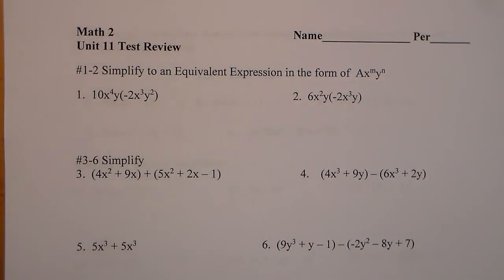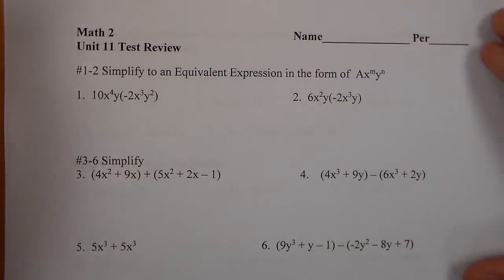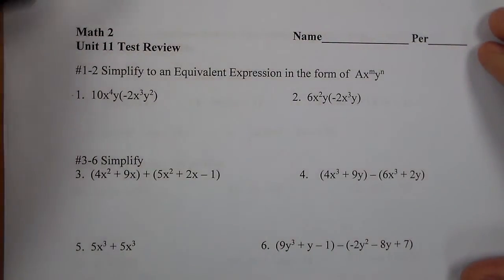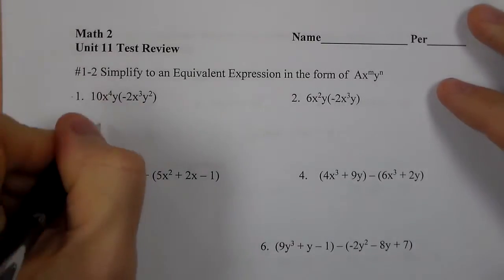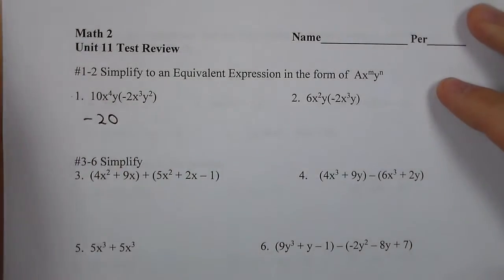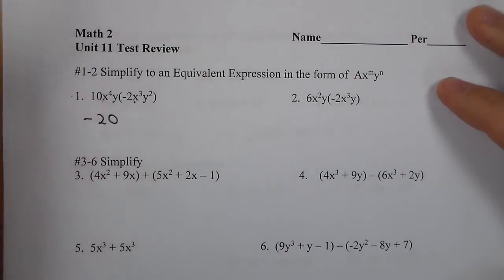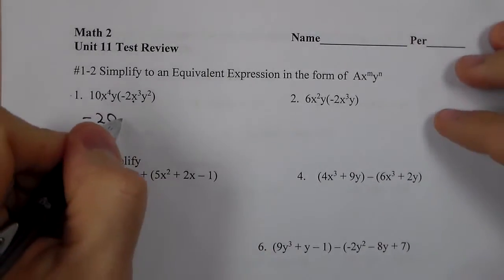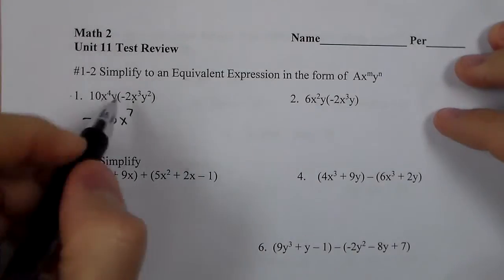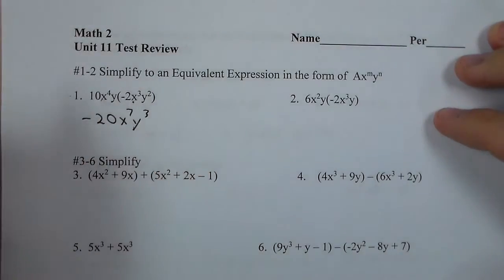Here we are at the Math 2 unit 11 test review. First thing we need to do on problems 1 and 2 is to simplify the expression. This is multiplication, so we go 10 times negative 2 is negative 20. We have x to the 4th and x to the 3rd — these are multiplying together so we add the exponents and get x to the 7th. Y and y to the 2nd gives us y to the 3rd.